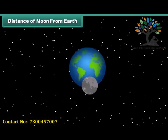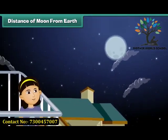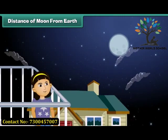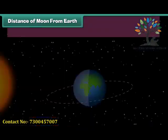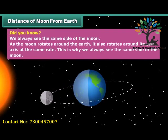The moon is an average of about 380,000 km from Earth, which is pretty close. Because of its proximity, we don't need a telescope to see features on the moon's surface from Earth. Did you know we always see the same side of the moon? As the moon rotates around the Earth, it also rotates around its own axis at the same rate. This is why we always see the same side of the moon.